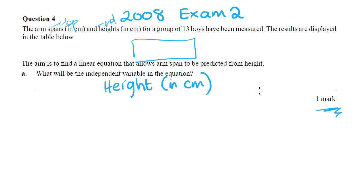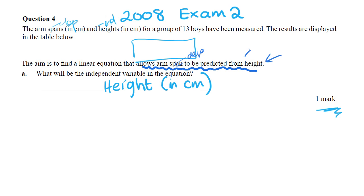Another way to tell in this question is to look at the wording: they are looking for an equation that allows arm span to be predicted from height. So they want arm span to be dependent upon height — they've given it to you right there. Again, arm span is the dependent variable and height is the independent variable.